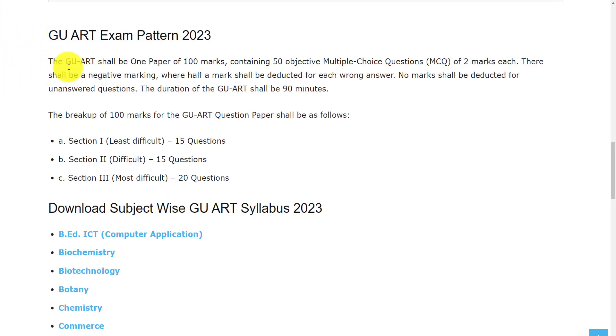Let's see the exam pattern of this examination. The GU ART exam will be one paper for 100 marks. You will have 50 objective multiple choice questions which are 2 marks each. There will be negative marking in which half a mark will be deducted for each wrong answer. No mark will be deducted for unanswered questions. The time duration for this examination is 90 minutes.